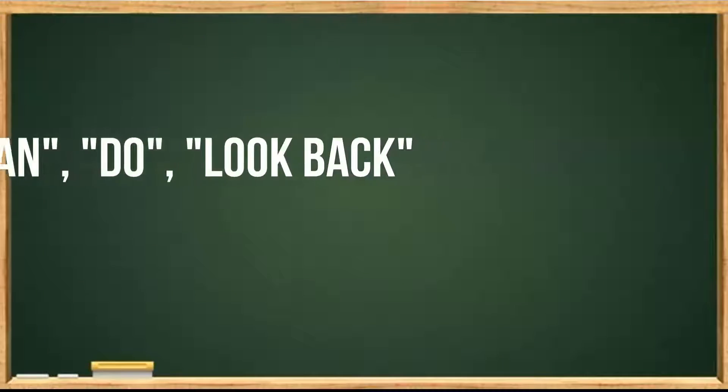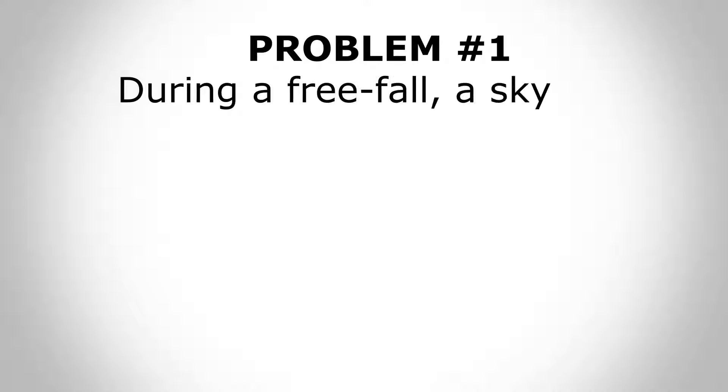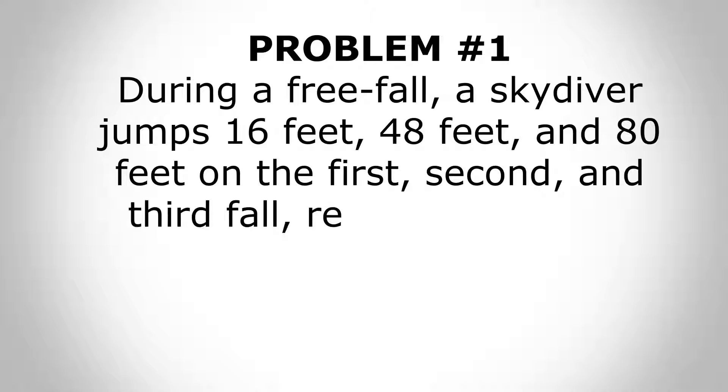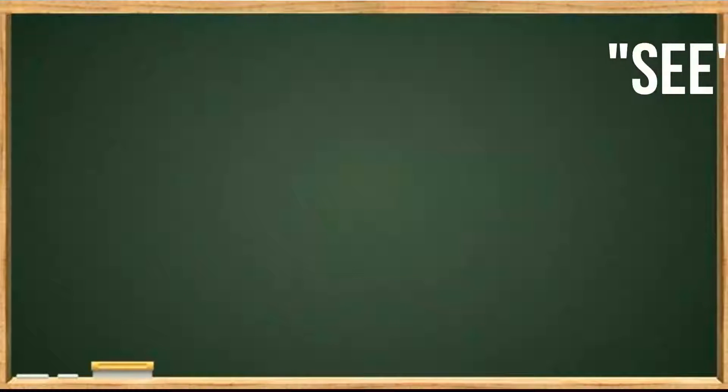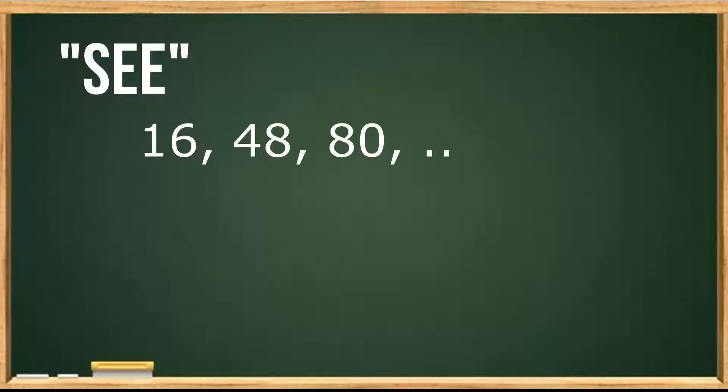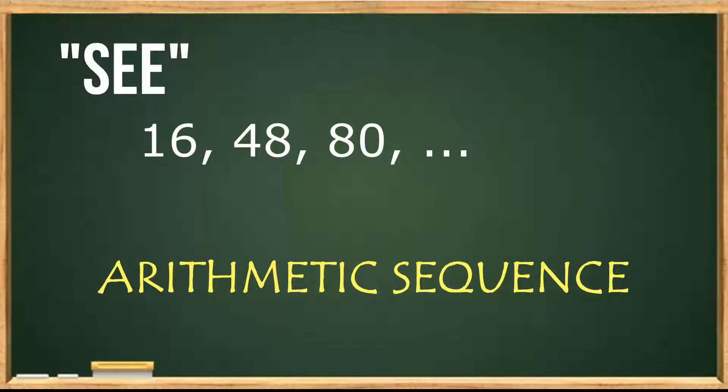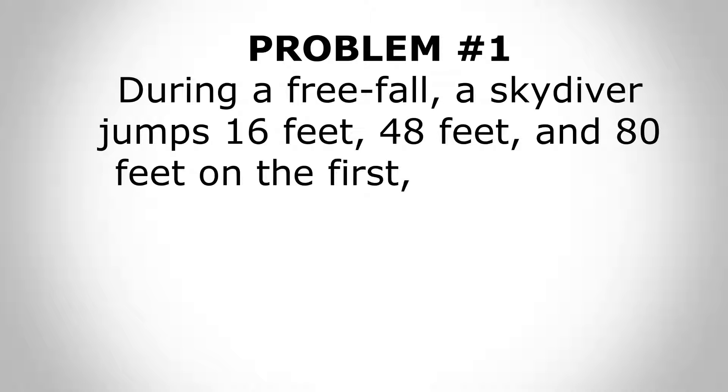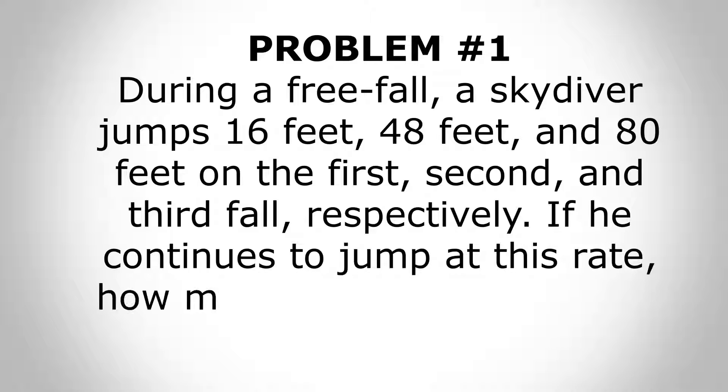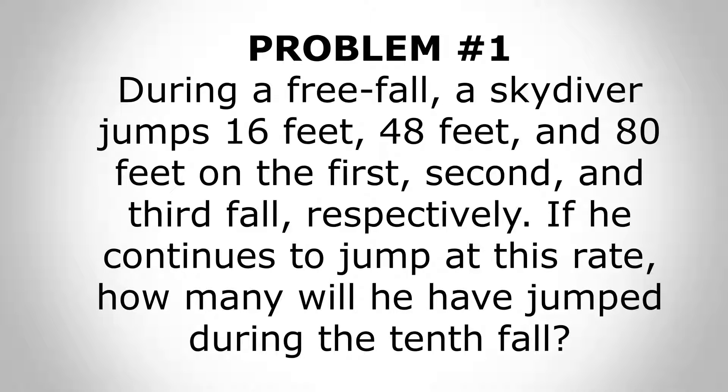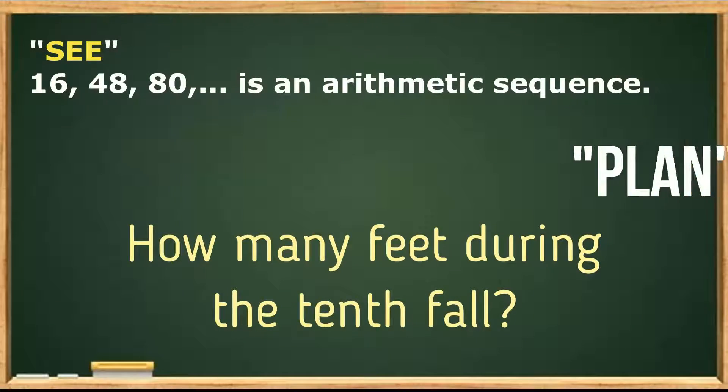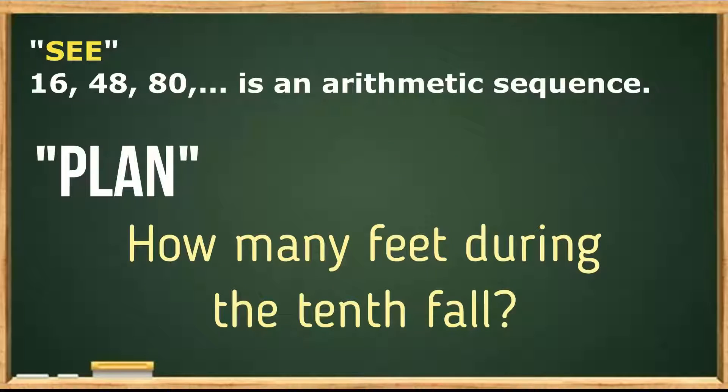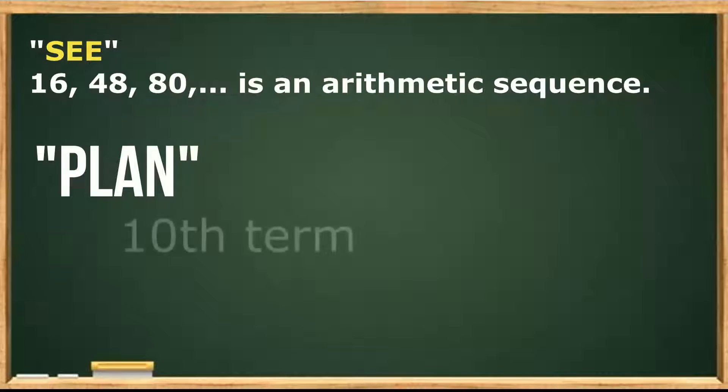Now let's see the problem. What type of sequence is illustrated here? Remember that if we write 16, 48, 80, we're gonna form an arithmetic sequence since there is a common difference. Now let's plan our solution. As we identify the problem as an arithmetic sequence, let's answer the problem: how many feet during the tenth fall? From here we can see that the tenth fall represents the tenth term.